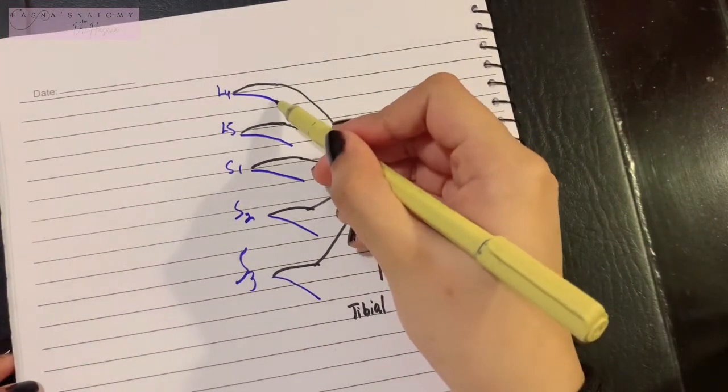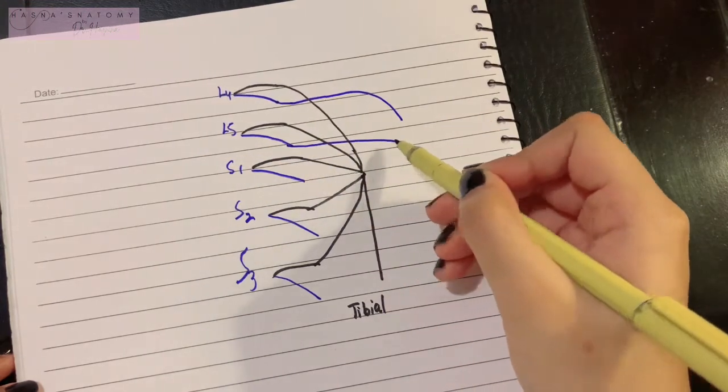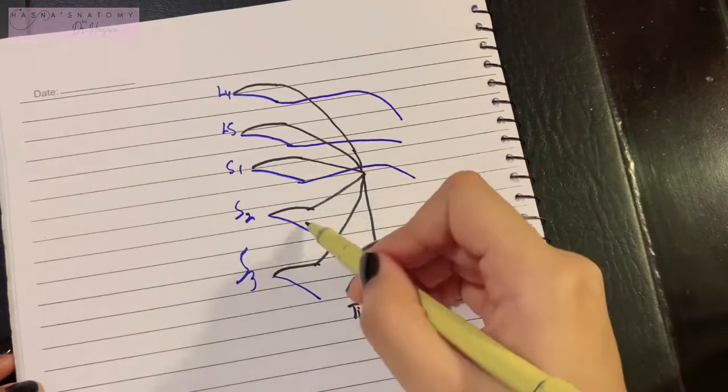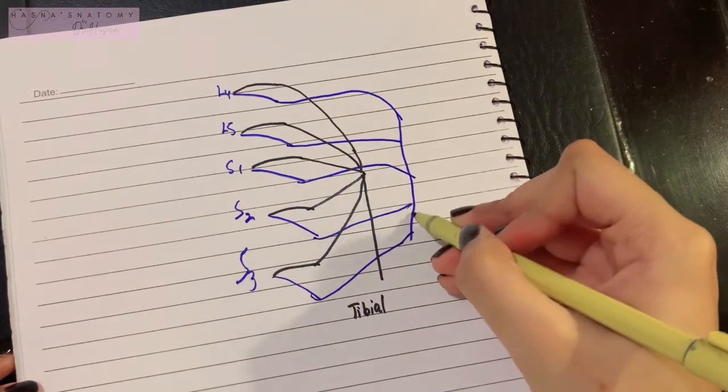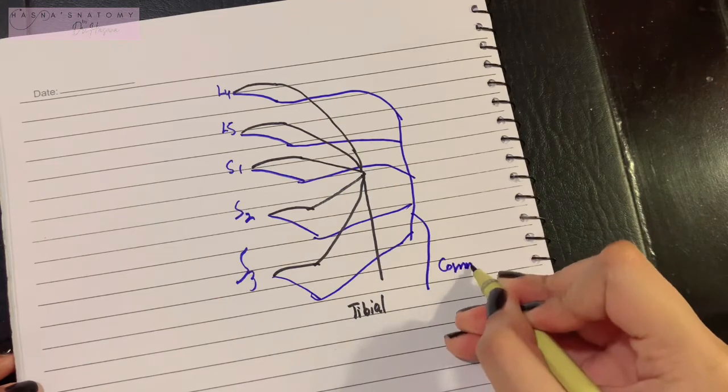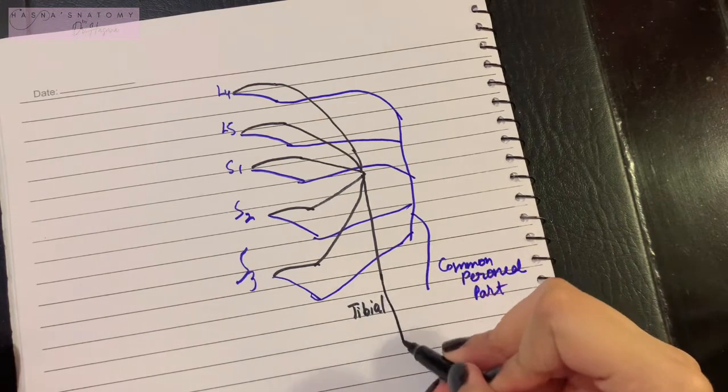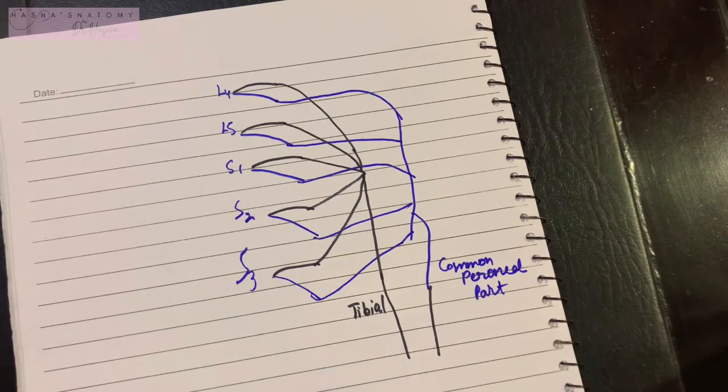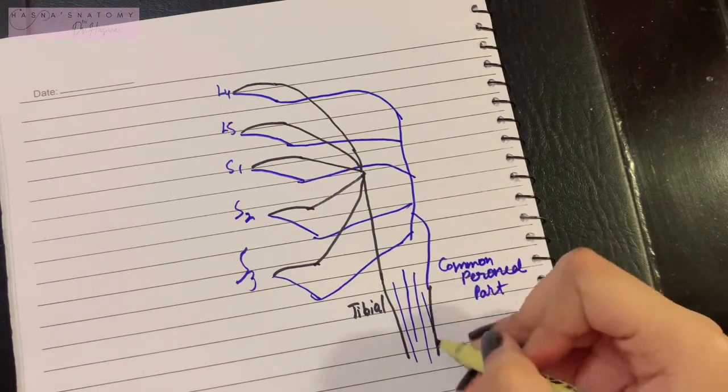The common peroneal part of the sciatic nerve arises from the dorsal divisions of the anterior primary rami of the L4, L5, S1, S2, S3 of the sacral plexus. All of these are basically forming the common peroneal part. Overall, combining the two parts, the sciatic nerve is formed.